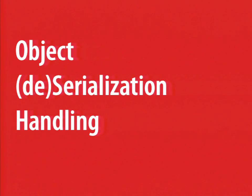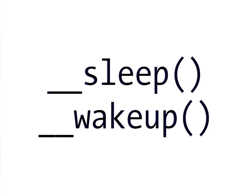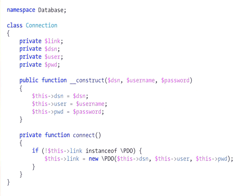If you deal with PHP objects and want to serialize or unserialize them, you can also use the __sleep and __wakeup magic functions. For example, we have a Connection object from a database namespace representing a database connection, with four properties: a link, a data source name, user, and password — and a private connect method that creates a PDO instance stored in the link property.